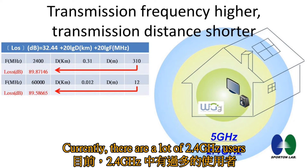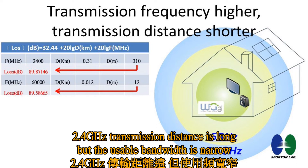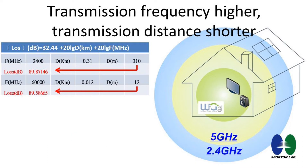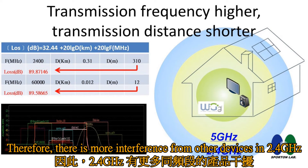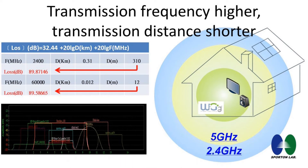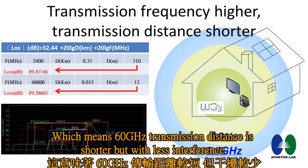Currently, there are a lot of 2.4GHz users. The 2.4GHz transmission distance is long, but the usable bandwidth is narrow. Therefore, there is more interference from other devices in 2.4GHz. In contrast, 60GHz transmission distance is shorter, but with less interference.